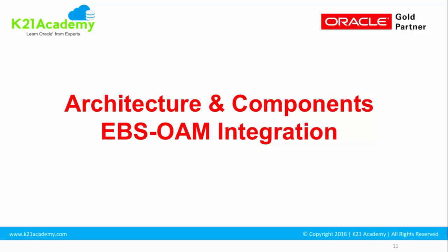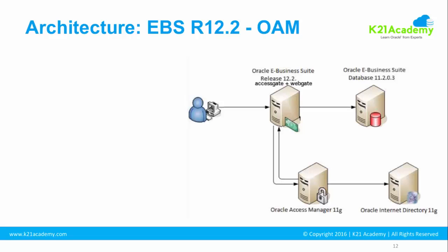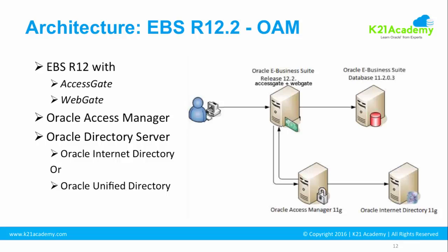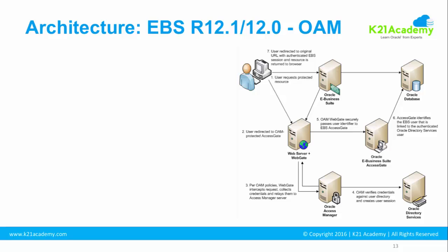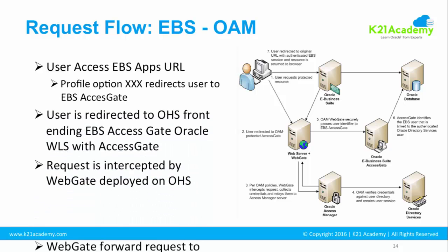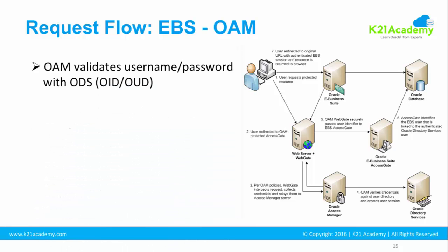Let's do a quick recap on what we covered in this lesson. We looked at the EBS R12.2 architecture, explaining the components deployed on the EBS application tier — AccessGate and WebGate — as well as Oracle Access Manager and Oracle Directory Server (OID or OUD). In the next lesson, we'll look at EBS 12.1 and prior release integration, and walk through the full authentication flow for both EBS 12.2 and 12.1 step by step. See you in the next lesson.